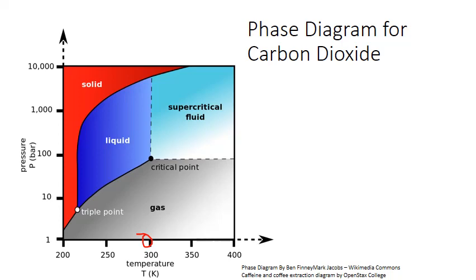So the triple point of CO2 is actually 5.2 bar and 216.6 Kelvin or negative 56.4 degrees Celsius. You can also see that the equilibrium line between the solid and liquid, the melting and freezing line, actually curves to the right, unlike it did with water. So solid CO2 is more dense than the liquid CO2 and is the more stable form at higher pressures.